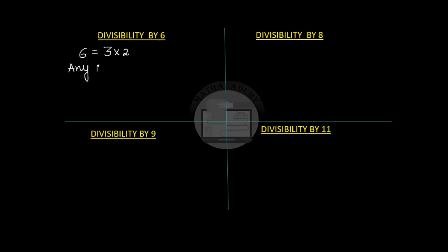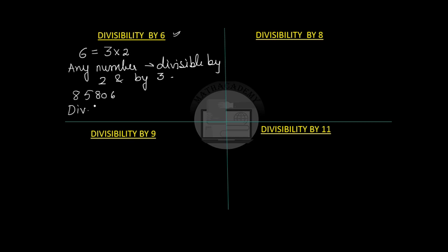Divisibility by 6: since 6 can be written as 3 times 2, any number that is divisible by both 2 and 3 is divisible by 6. For example, take 85806. It is an even number, so it is divisible by 2. Adding the digits: 8 plus 5 plus 8 plus 0 plus 6 equals 27. Since 27 is divisible by 3, the number is also divisible by 3, and hence divisible by 6.